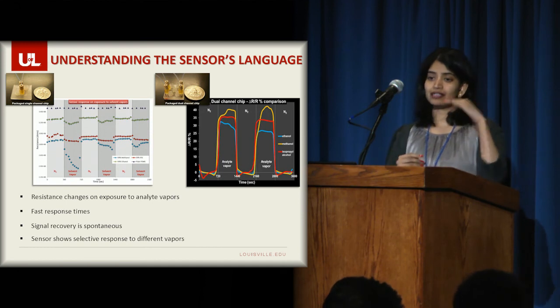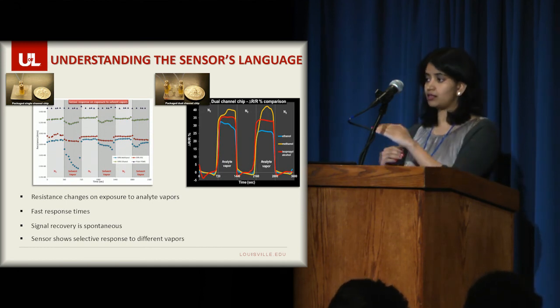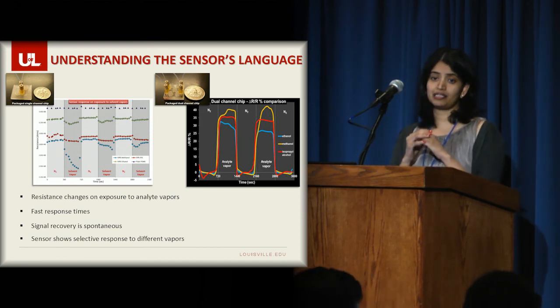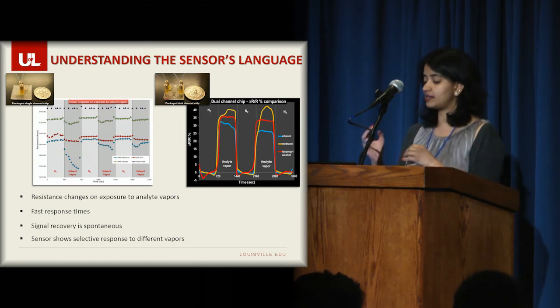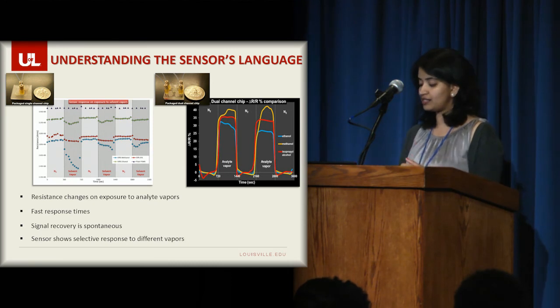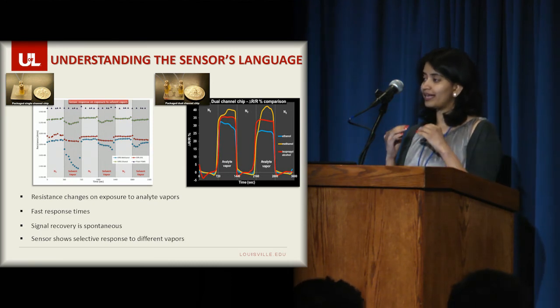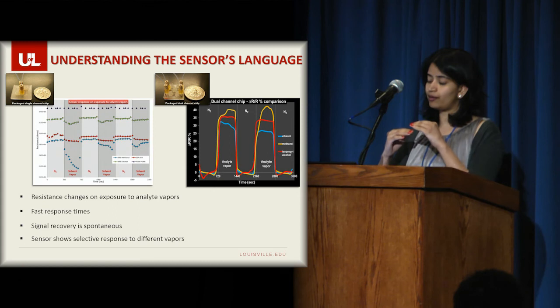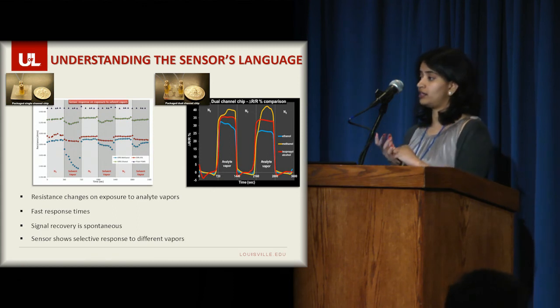So you can see that when there's nitrogen in the system, it establishes a baseline resistance. And when it is switched from nitrogen to an analyte gas, the graphene layer instantly responds. You can see the change here. And when the gas is again switched back from the analyte vapor to the nitrogen, the signal recovery is spontaneous.